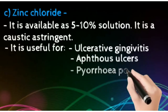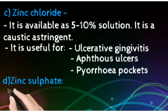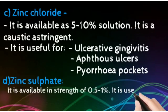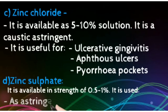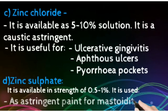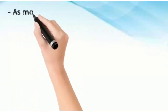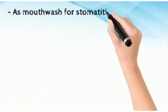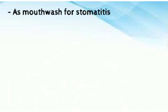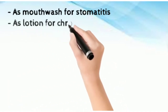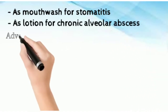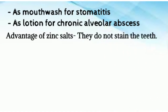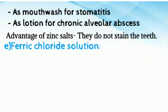You can see zinc sulfate. It is available in a strength of 0.5% to 1%, and it is used in this strength. It is used as an astringent paint for mastoiditis, and also as a mouthwash for stomatitis. You can also use it as a lotion for any chronic alveolar abscess. One very good advantage of zinc salt is that they do not stain the teeth.